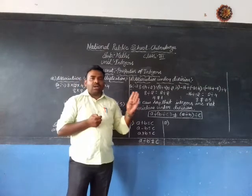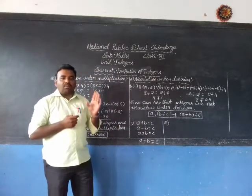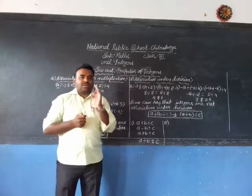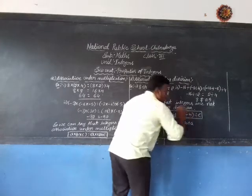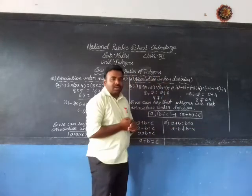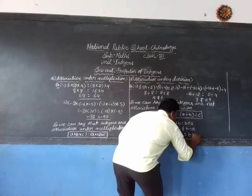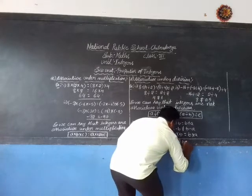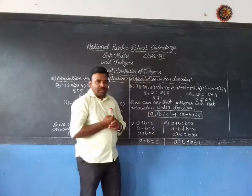Next: commutative property. Only addition and multiplication follow the commutative property. Integers are commutative under addition and multiplication, but not under subtraction and division. That is: A + B = B + A (commutative under addition), A − B ≠ B − A (not commutative under subtraction), A × B = B × A (commutative under multiplication), A ÷ B ≠ B ÷ A (not commutative under division).